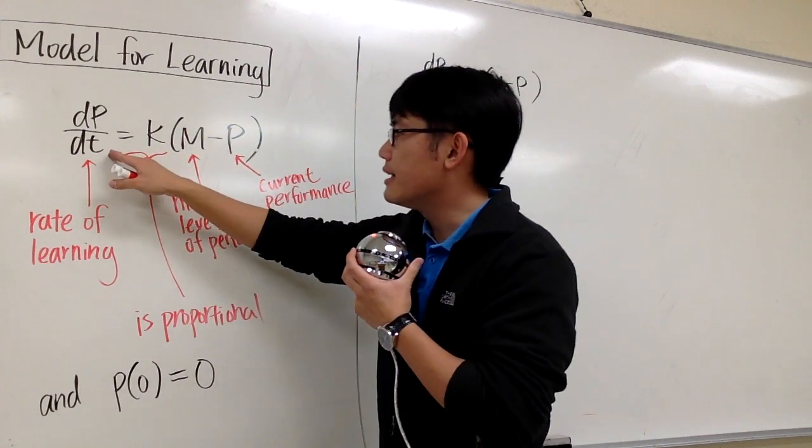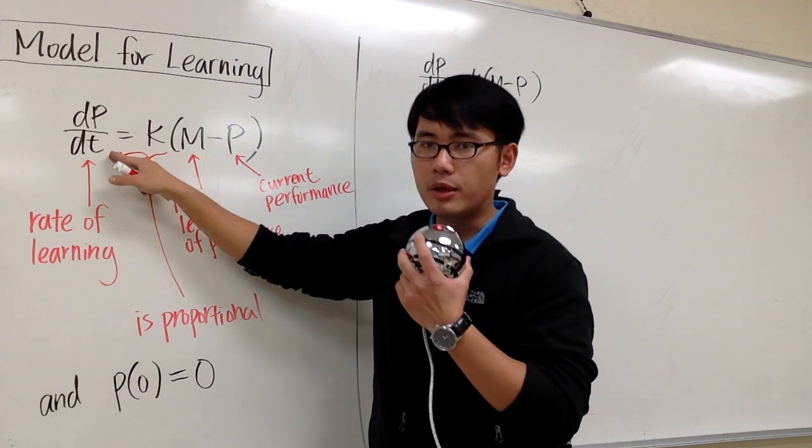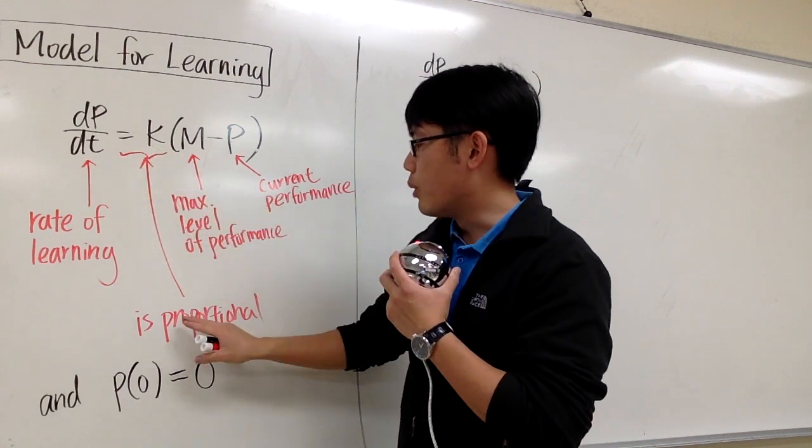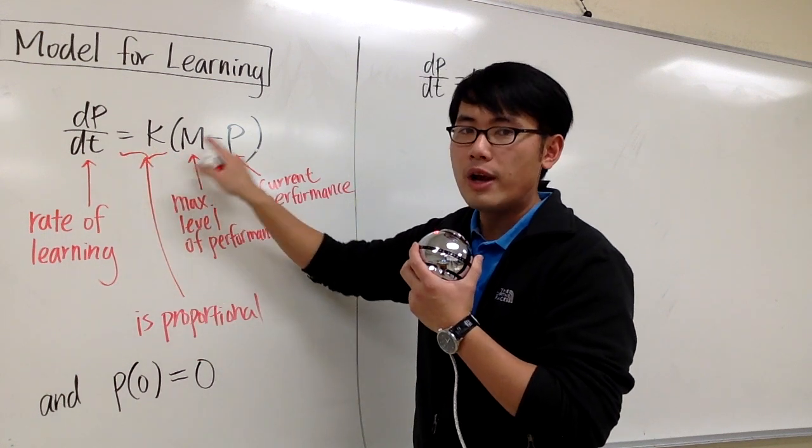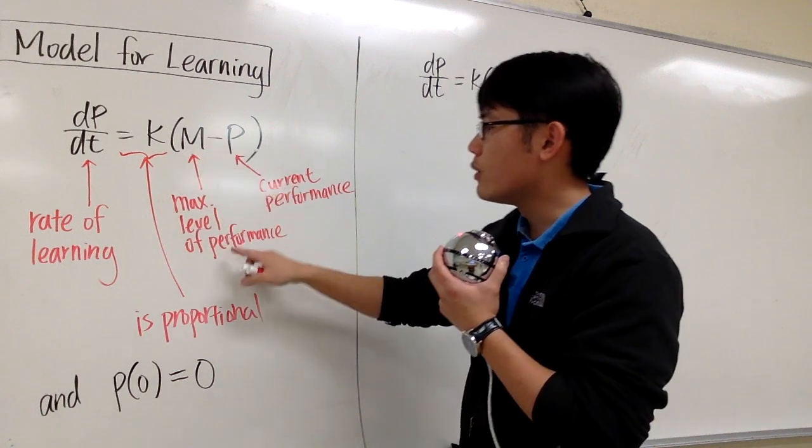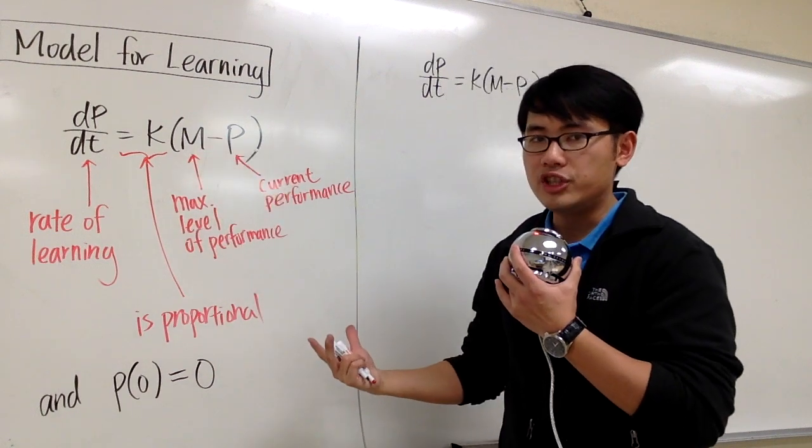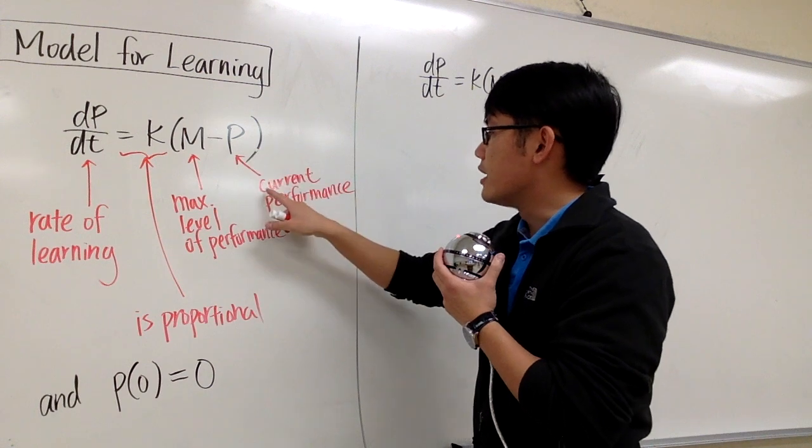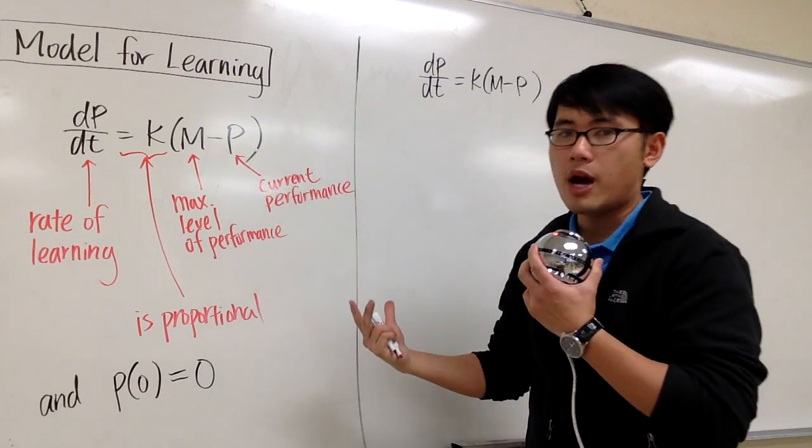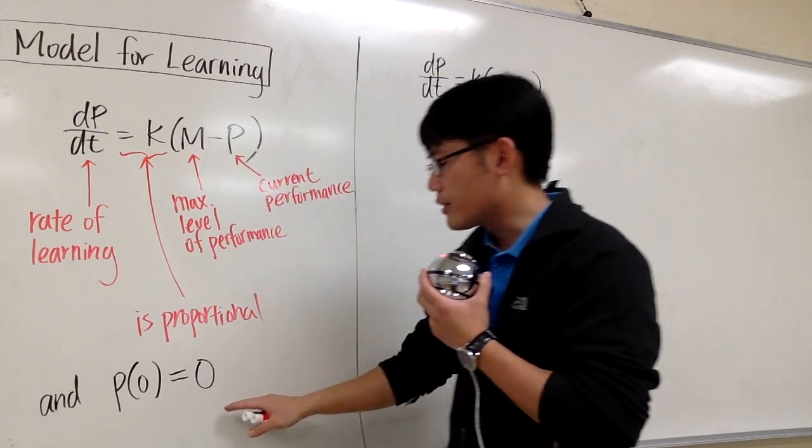In words, I can say this as the rate of learning, how fast a person can learn, is proportional to the difference between the maximum level of performance somebody can ever achieve and the current performance that the person is at right now.